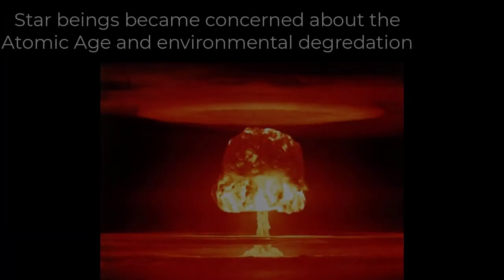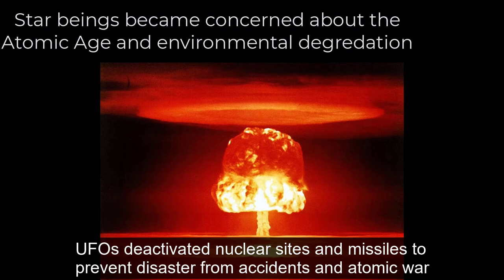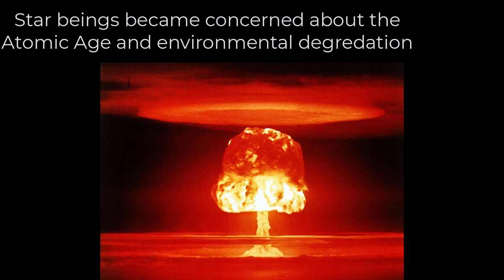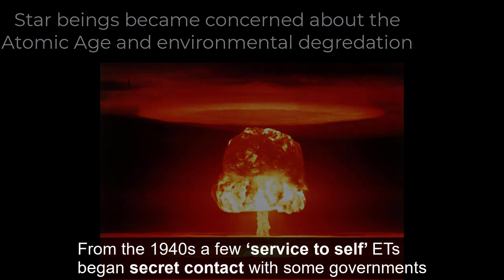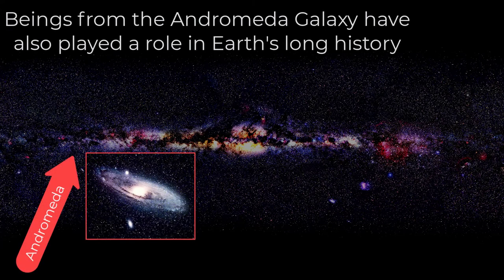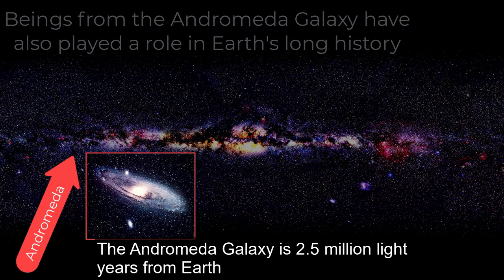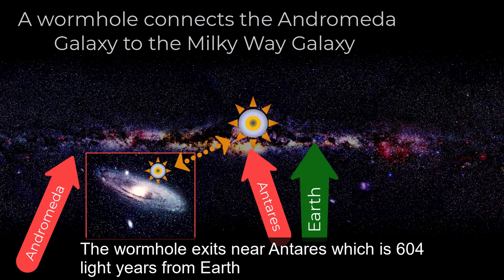Star beings became concerned about the atomic age and environmental degradation. UFOs deactivated nuclear sites and missiles to prevent disaster from accidents and atomic war. From the 1940s, a few service-to-self ETs began secret contact with some governments. So far, the story has been about star beings within 720 light-years of Earth. Beings from the Andromeda Galaxy have also played a role in Earth's long history. The Andromeda Galaxy is 2.5 million light-years from Earth. A wormhole connects the Andromeda Galaxy to the Milky Way, exiting near Antares, which is 604 light-years from Earth.